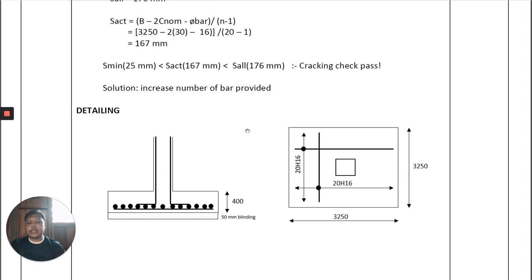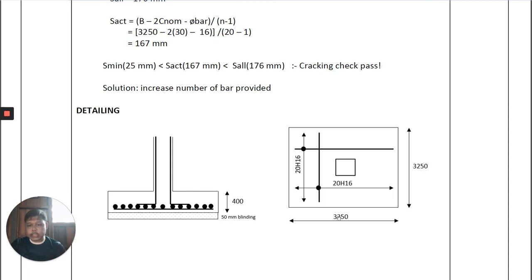Here is the detailing of the reinforcement for the pad footing under axial load. I hope that through this example you now know how to design a square pad footing under axial load. In the next example we will proceed to the next type of loading, which is axial load combined with moment. That's all for today's sharing session — thank you, Assalamualaikum warahmatullahi wabarakatuh.